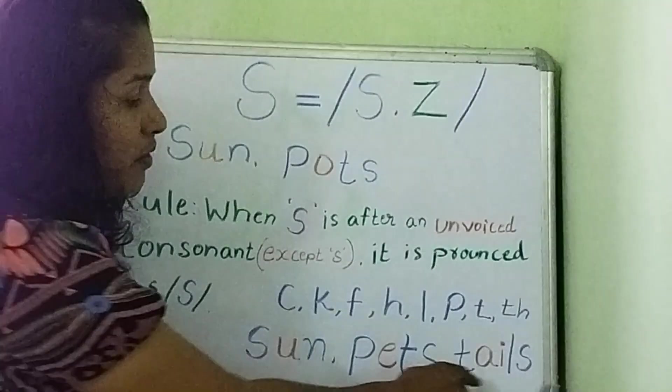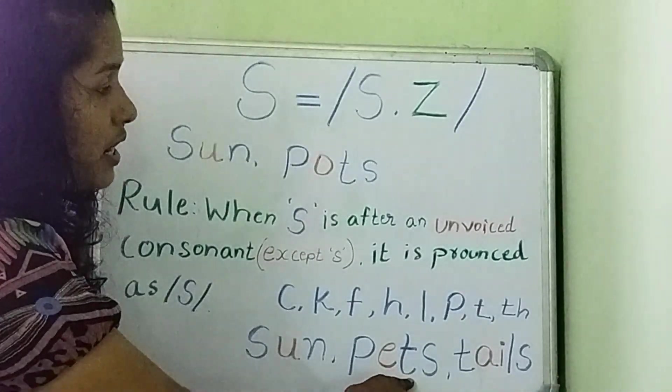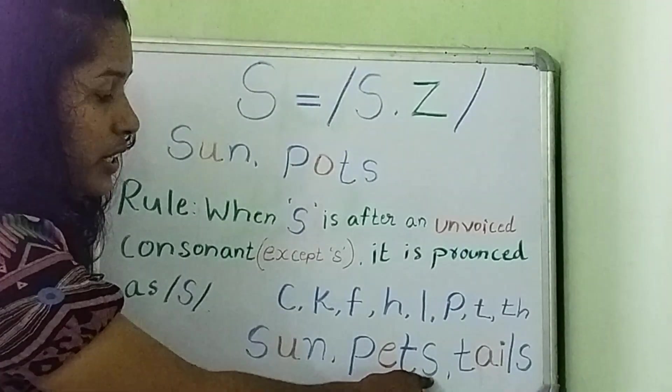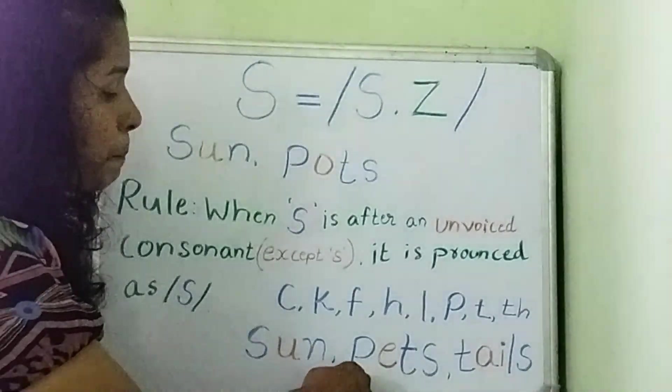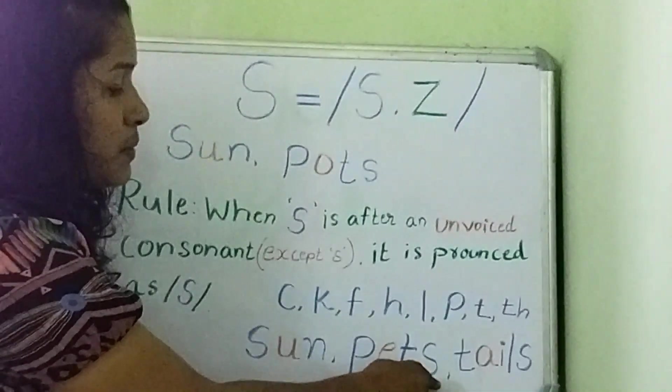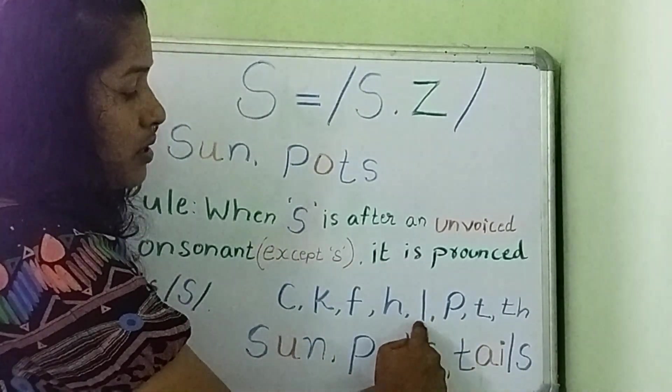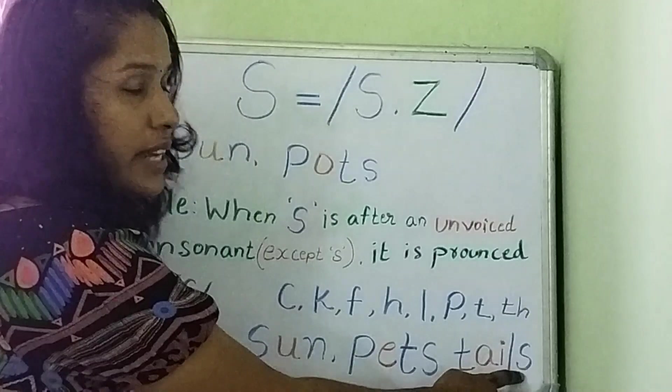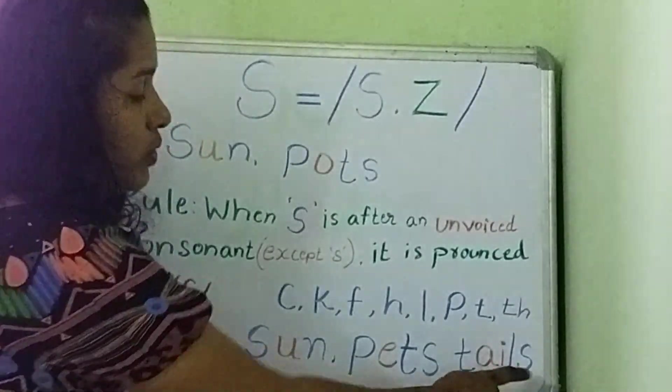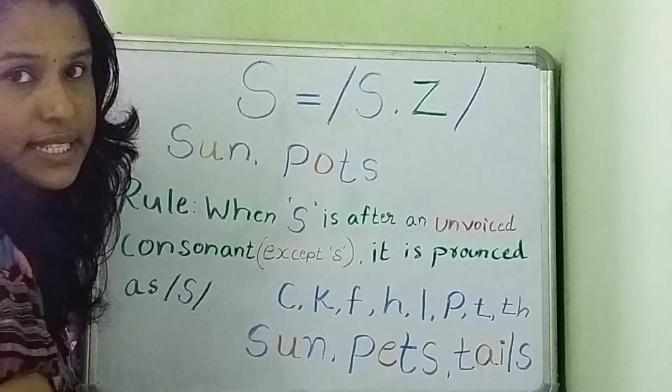Now let's see here consonants. T is an unvoiced sound. So after T, S is pronounced as S. Pots, acts, spats. Here also, L is an unvoiced consonant, so S will say the S sound. Tails.